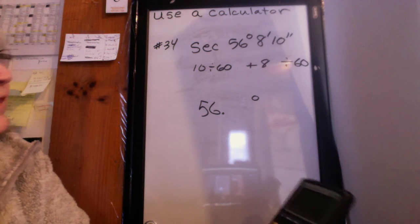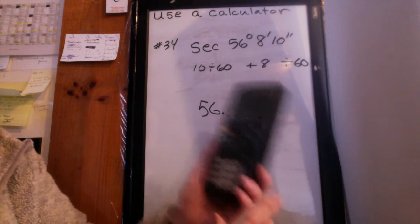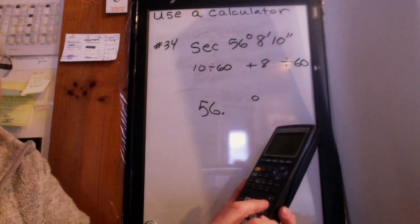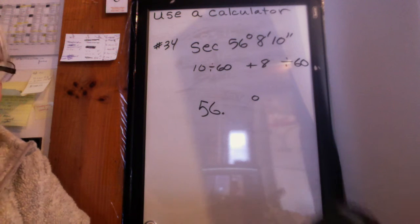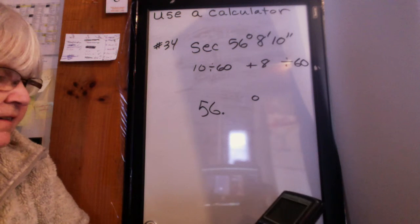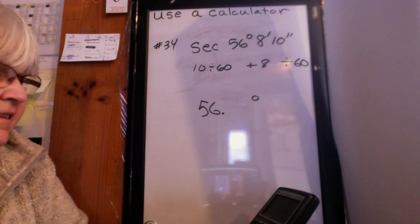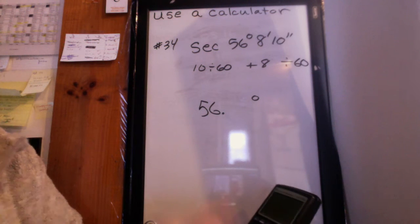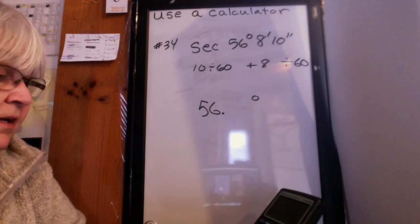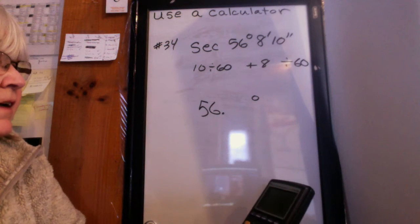Clear everything out. So you're going to do 10 divided by 60, then hit enter. Oops, clear it out. I didn't do something right here. 10 divided by 60, hit enter. You get a decimal. Now do plus 8. So plus 8, hit enter.